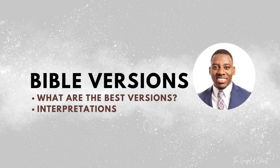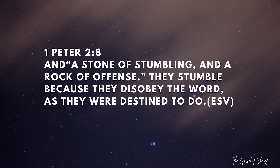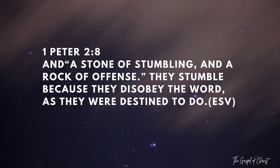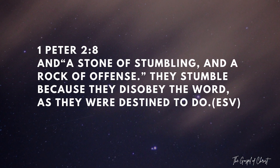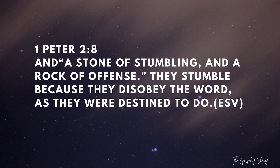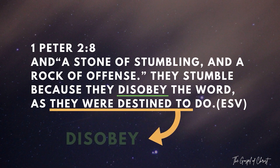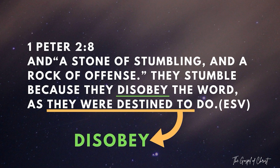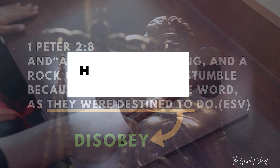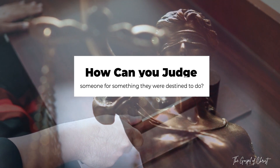Now let's take a look at the ESV — the English Standard Version — which reads: 'And a stone of stumbling and a rock of offense. They stumble because they disobey the word, as they were destined to do.' Based on that version, it seems as though Peter is telling us that they were destined — appointed — to disobey, which is very problematic. The first question that comes to mind is: how can you judge someone for something they were destined to do?